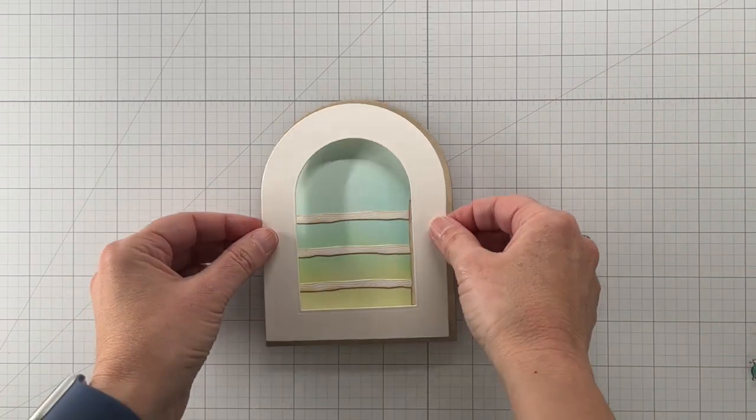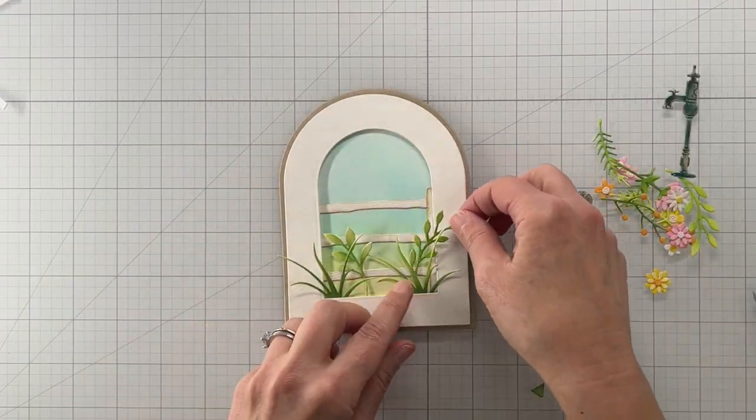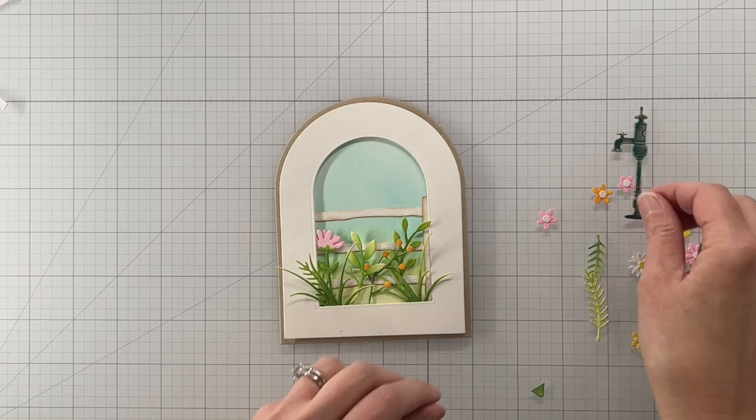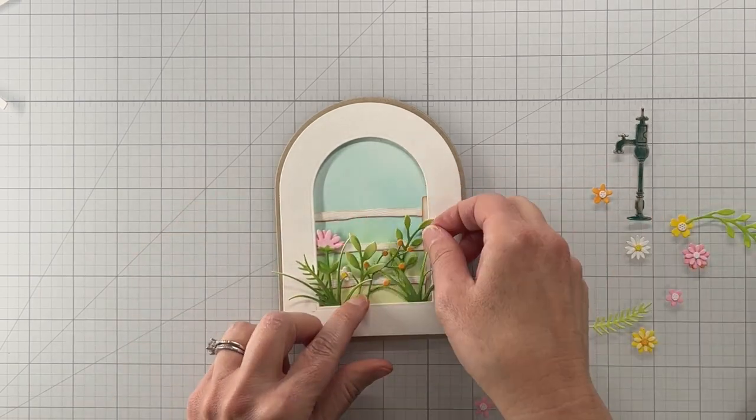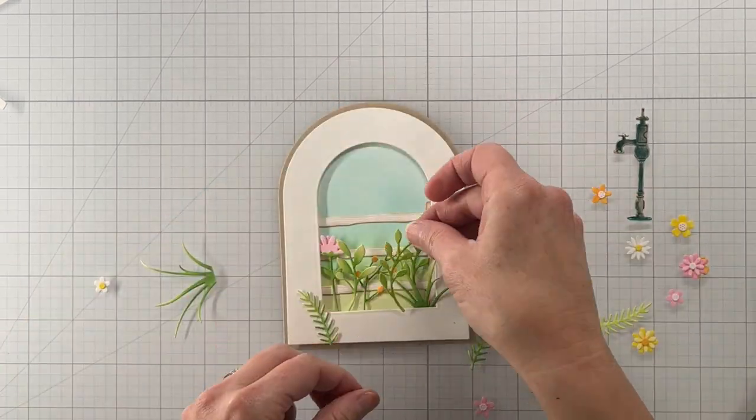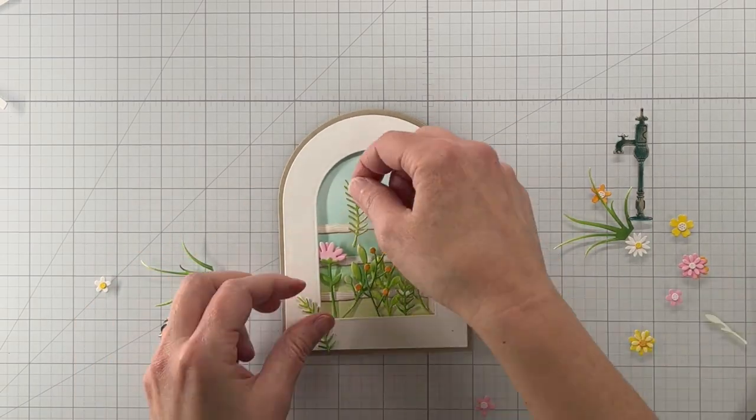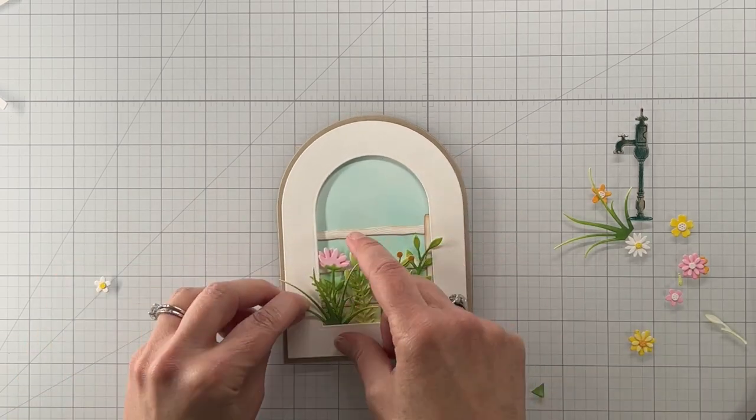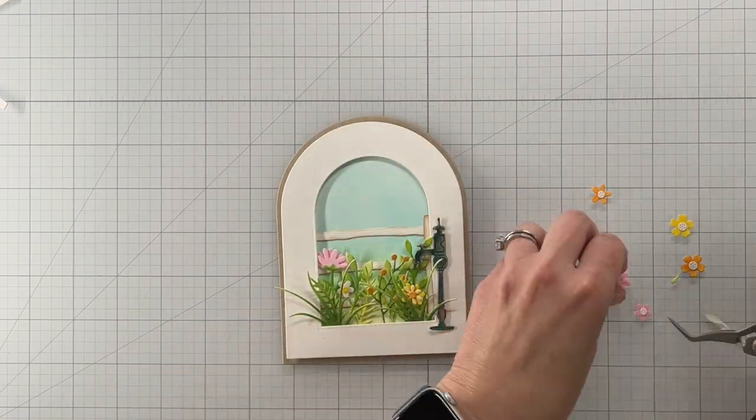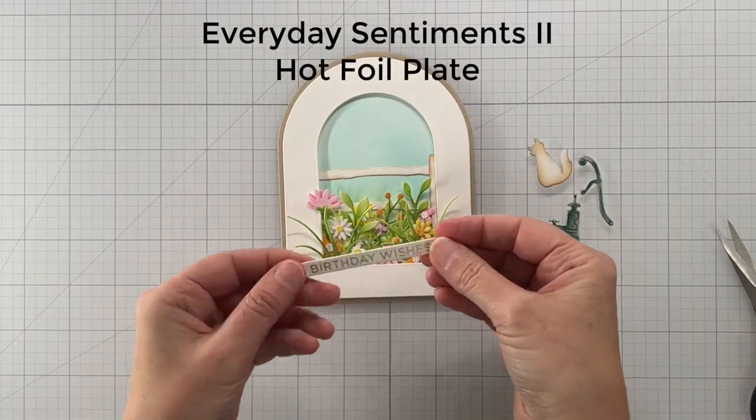So now I'm going to attach my window opening and here I am going to start auditioning all of my floral elements. So before I start gluing down I just want to figure out what looks good. There is no perfect arrangement let's just get that straight, but what I do is I put it all in there until I'm happy and then I'll take a picture of it and then I'll pull it all back out and start gluing everything down.